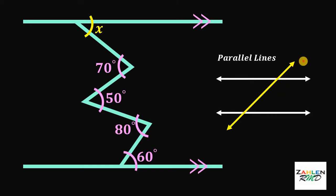For example, these two angles, they are called the alternate interior angles. And alternate interior angles are equal.